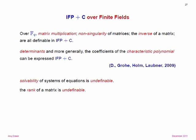So here's what we can say. Over any finite field: matrix multiplication, non-singularity of a matrix, and the inverse of a matrix are all definable in fixed-point with counting. It turns out it requires a little more work to show that determinants of matrices are definable, and in fact all the coefficients of the characteristic polynomial are definable. But the rank of a matrix is undefinable, and the solvability of systems of equations is undefinable. This was in our paper from VIX 2009.